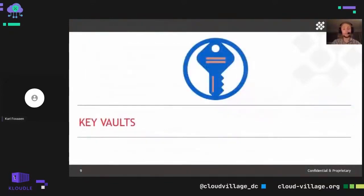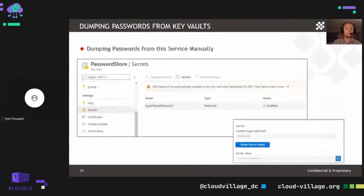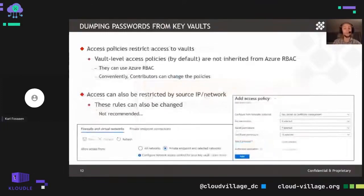The first service we'll talk about today is Key Vaults. Key vaults store passwords — the service is pretty straightforward. It stores credentials and is used in an Azure subscription to hold secrets, keys, certificates, anything you'd want to protect. Manually dumping credentials from this service is also pretty straightforward. You can go into the keys and secrets if you have access to read those, and then manually show the secret value or download a backup copy of the certificate. However, this requires you to have rights to read and list any of those keys or secrets in the access policy.